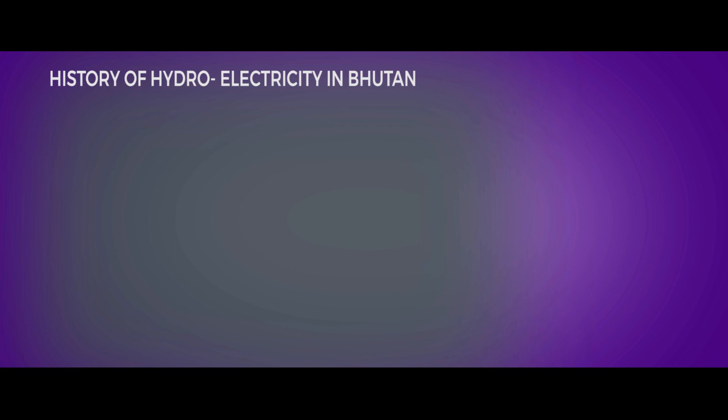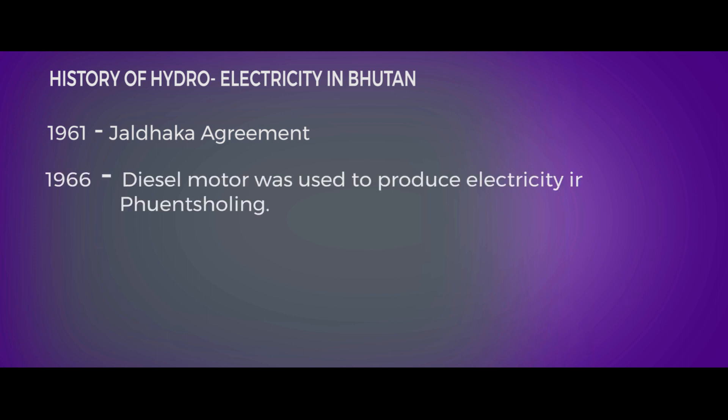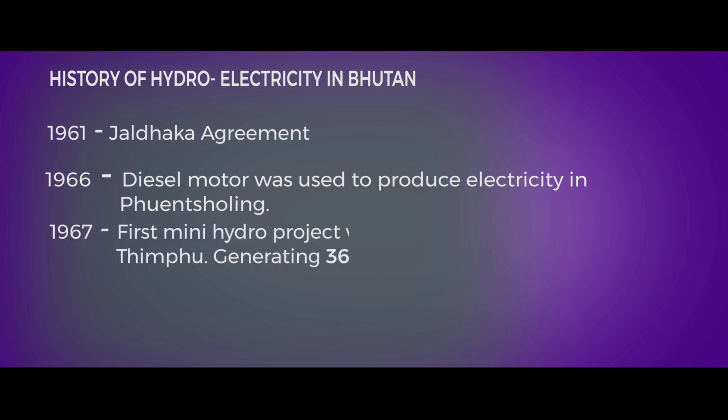Let me begin with a brief history of hydroelectric power plants in Bhutan. The history of hydroelectricity started with the signing of the Jaldhaka Agreement between India and Bhutan in 1961. That was the beginning of hydropower plants in the country. In 1966, a diesel motor was used to produce electricity in Phuntsholing.